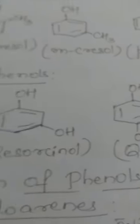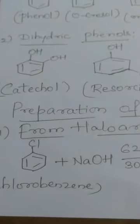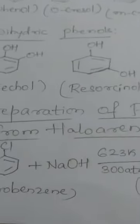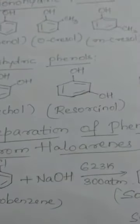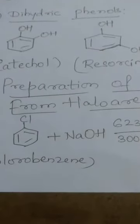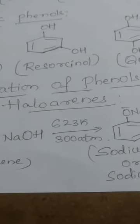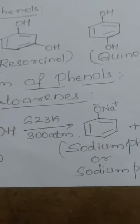After knowing the classification of phenols, next we will move to preparation of phenols. The first method of preparation of phenols is from haloarenes. One particular example taken is chlorobenzene, C6H5Cl. Chlorobenzene on fusion with sodium hydroxide (NaOH) at a high temperature of around 623 Kelvin and a pressure of 300 atm will yield sodium phenate.